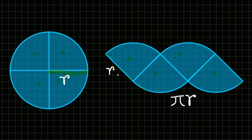Now if I tell you this object right here is a rectangle, most of you will think I'm completely out of my mind — because there's no way this is a rectangle. This side is not really a straight line and the four angles are not equal. For example, this angle and this angle are not equal to each other. So there's no way this is a rectangle. Fair enough.